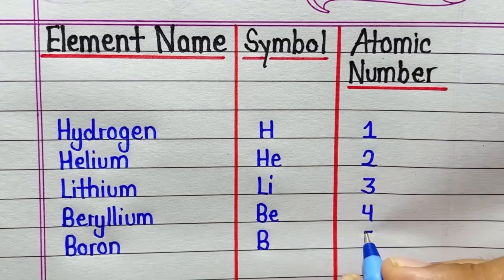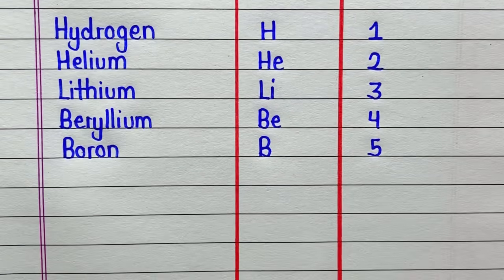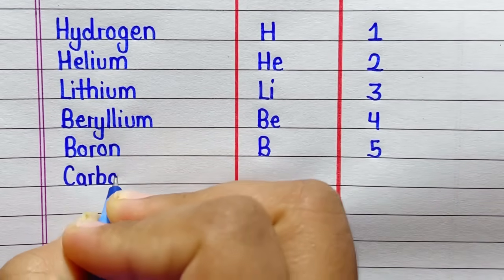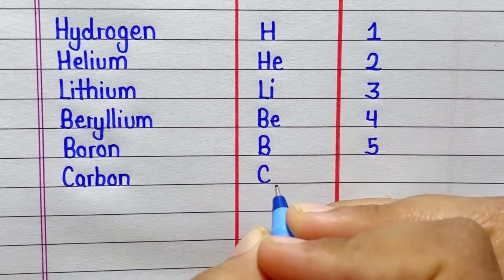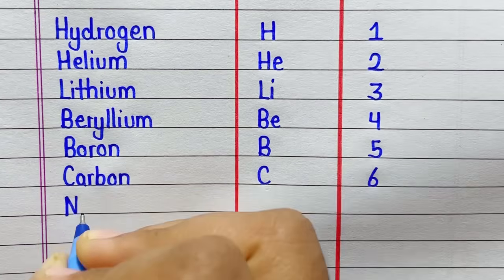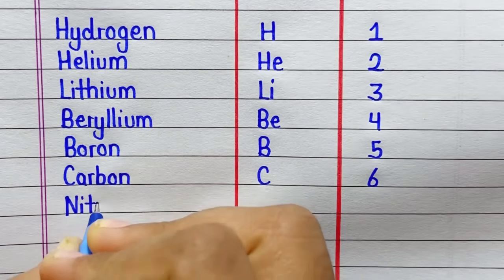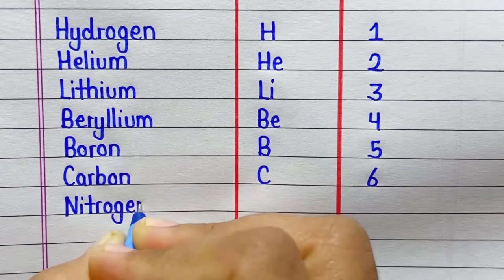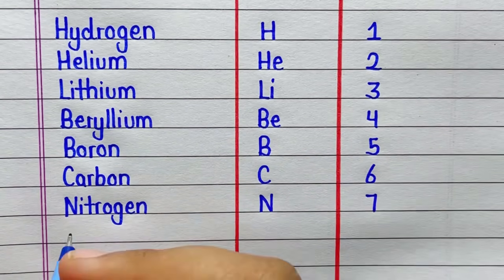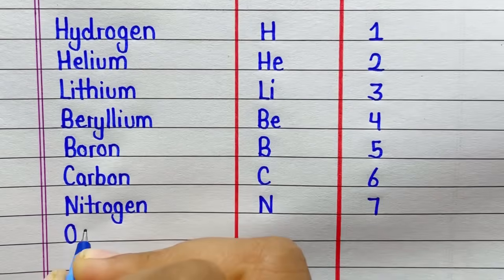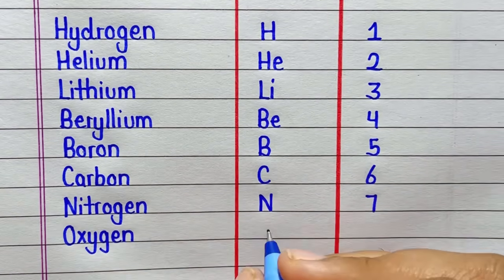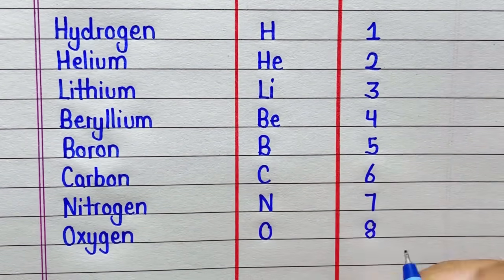Boron, symbol is B, atomic number is 5. Carbon, symbol is C, atomic number is 6. Nitrogen, symbol is N, atomic number is 7. Oxygen, symbol is O, atomic number is 8.